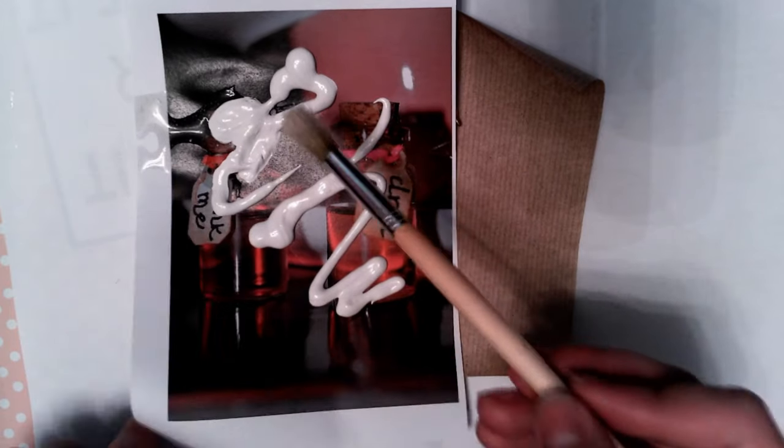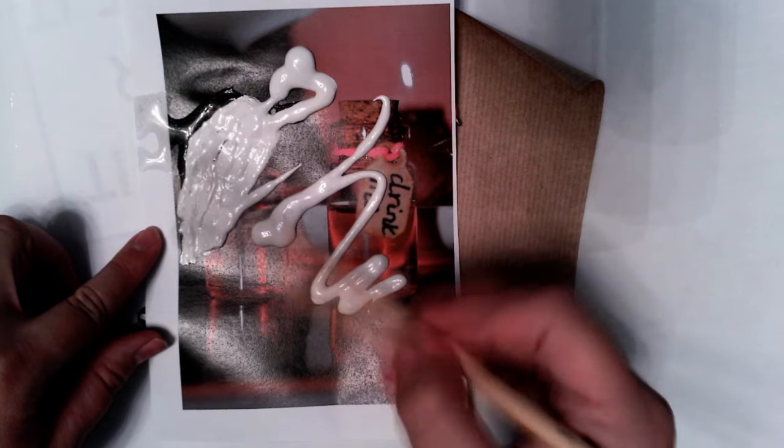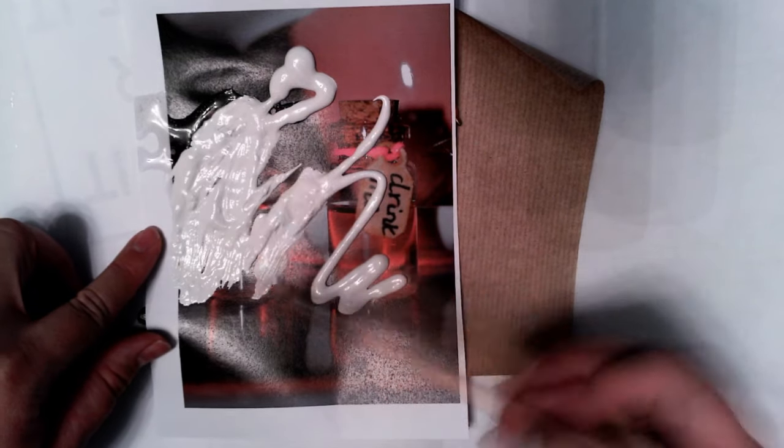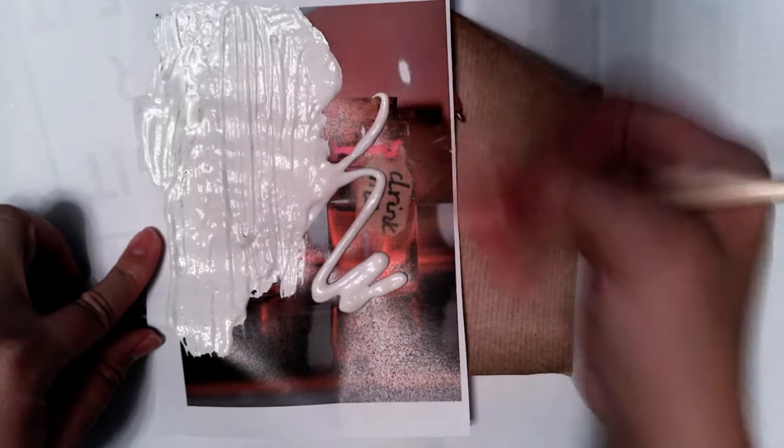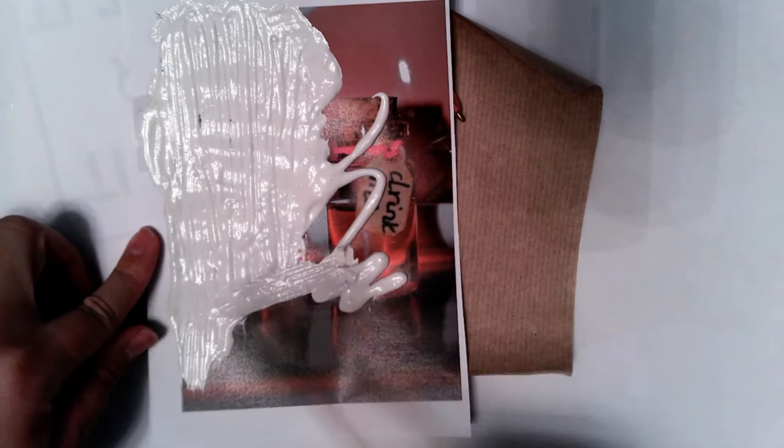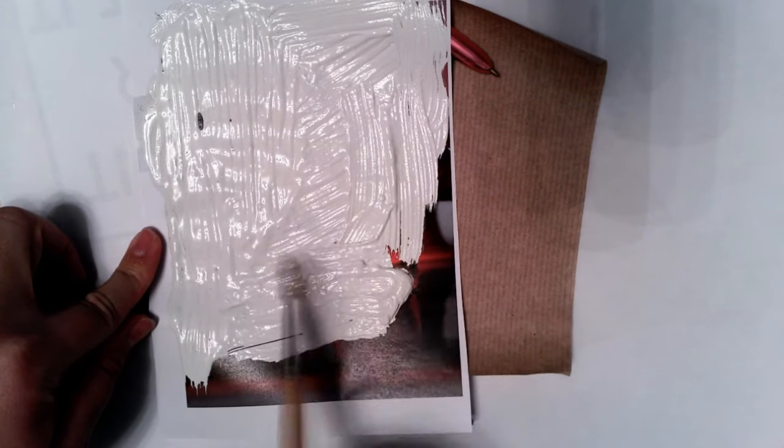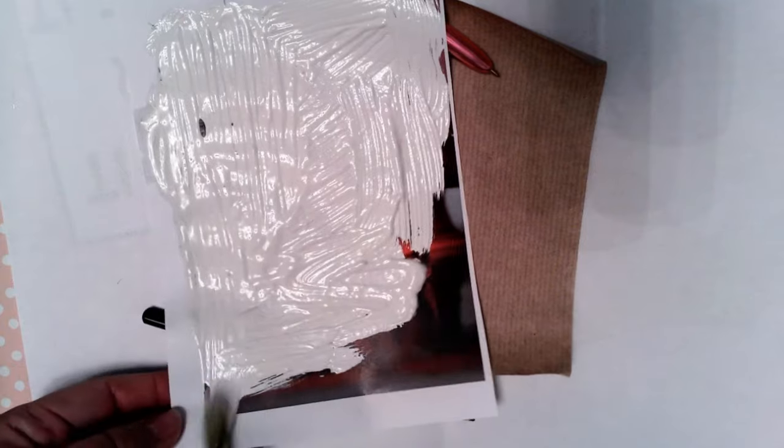Make sure you shake your tester pot first of all. Then we're going to apply a nice thick, even layer. You don't really want to be seeing any of your photocopy seeping through. Cover your image all over, making sure you've got that thick, solid layer of paint.